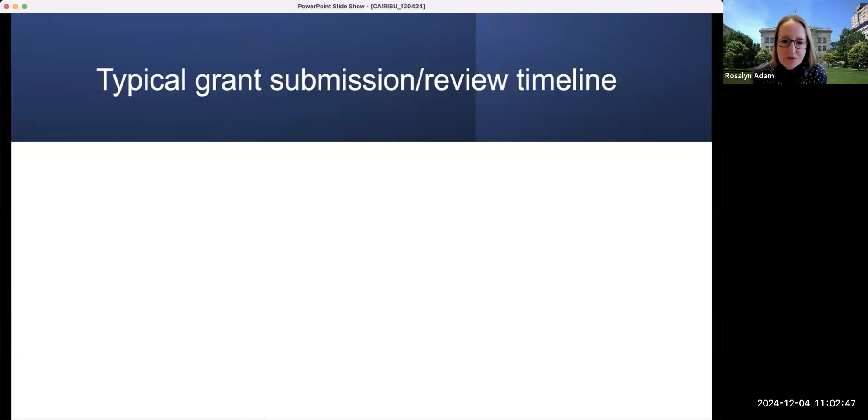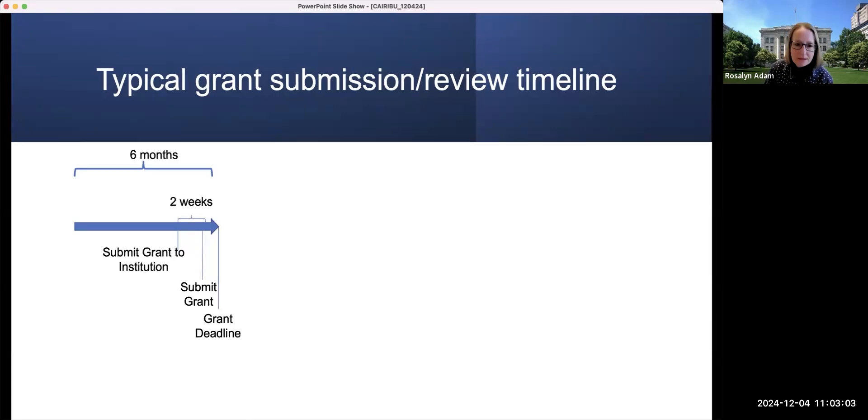So I think it's helpful just to review the typical grant submission and review timeline for those of you who are perhaps new to this process. Generally speaking, you're going to spend anywhere from three to six months preparing your grant for submission. Most institutions will request that they see the grant at least two weeks before the deadline. And once the grant has been submitted to the funding agency, it takes about a month. Certainly if we're talking about the NIH, the grant will go through a process of receipt and referral. And through that process, it will be assigned to a scientific review group, also known as a study section.